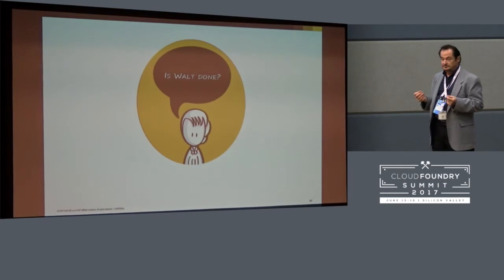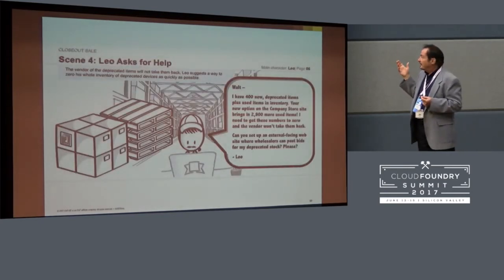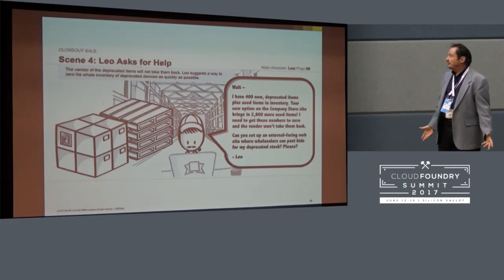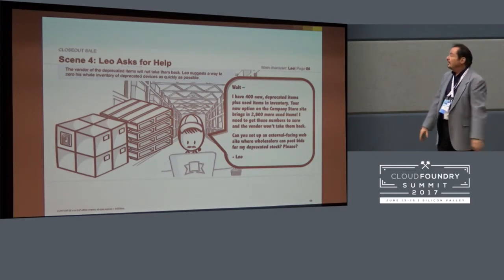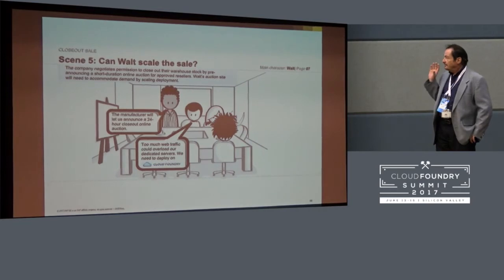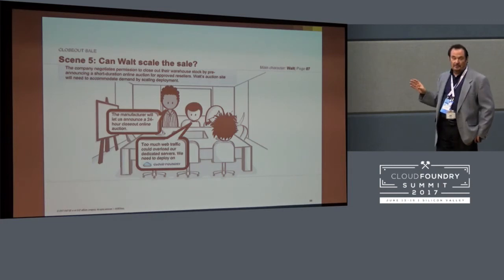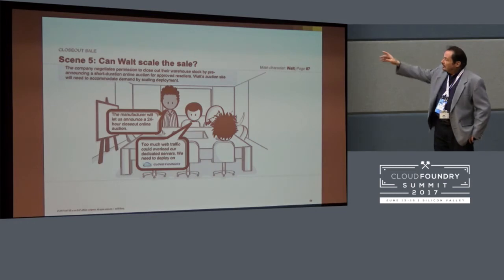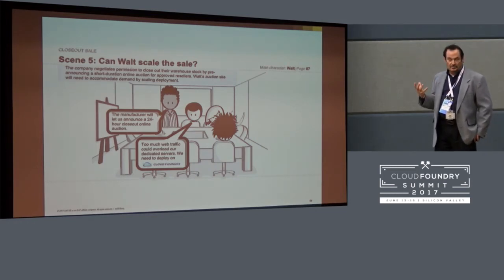Is he done? Well, not quite. Leo is now getting flooded with thousands of phones which the vendor will not take back. His idea for a solution is could he please have an external facing website so that wholesalers can bid on these things and he can clear his stock — he needs to zero his inventory. They discuss it and the company is able to negotiate to have a 24-hour closeout online auction.